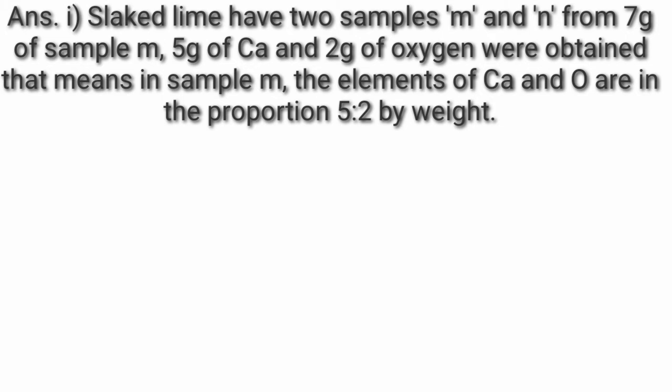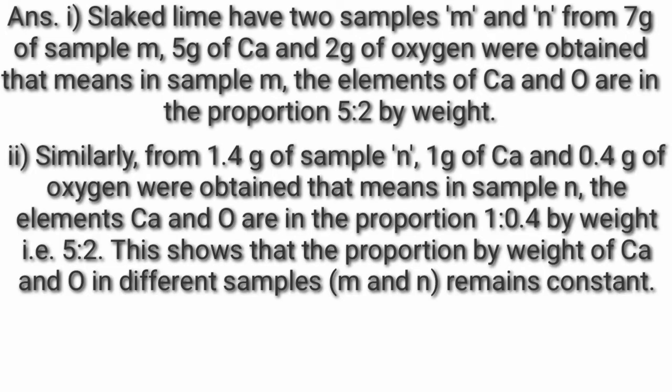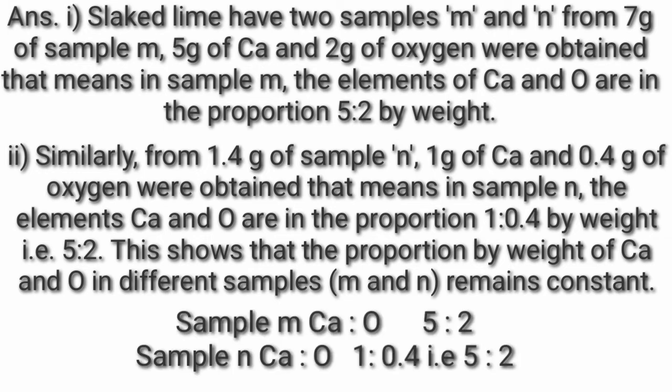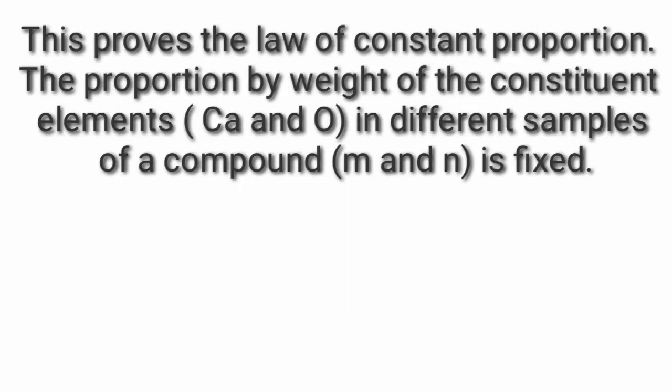In sample M, the elements Ca and O are in the proportion 5:2 by weight. Similarly, from 1.4g of sample N, 1g of Ca and 0.4g of oxygen were obtained. In sample N, the elements Ca and O are in the proportion 1:0.4, that is 5:2. This shows that the proportion by weight of Ca and O in different samples M and N remains constant. This proves the law of constant proportion.